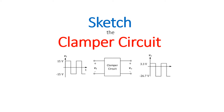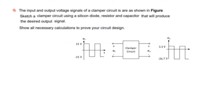This video is about clamper circuits, requested by a student from Malaysia. The question shows input and output voltage signals of a clamper circuit, and asks us to sketch a clamper circuit using a silicon diode, resistors, and capacitor to produce the desired output. Since a silicon diode is specified, there will be a 0.7 volt drop across the diode. All necessary calculations are required to prove the design.